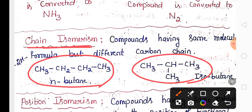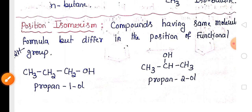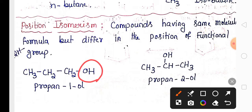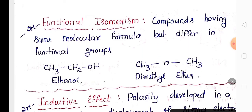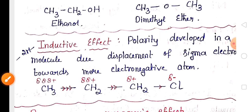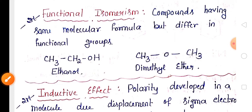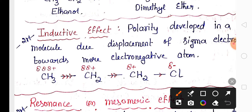Chain isomers and examples are very important — same molecular formula but differing in chain structure. Position isomers have the same molecular formula but differ in the position of the functional group. Compounds having the same molecular formula but differing in the functional group are called functional isomers.